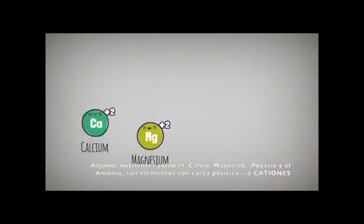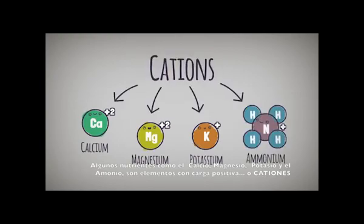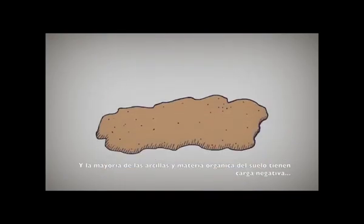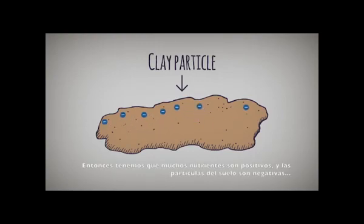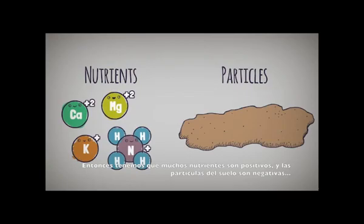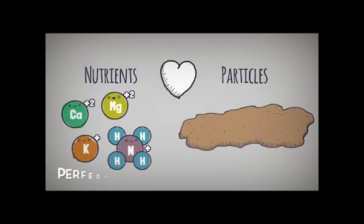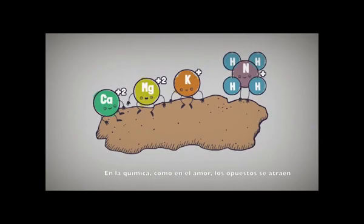Nutrients like calcium, magnesium, potassium, and ammonium are all positively charged chemicals, or cations. And as it turns out, most clay particles and organic matter in soil are negatively charged. So many nutrients are positive and particles are negative. In chemistry, as in romance, opposites attract.